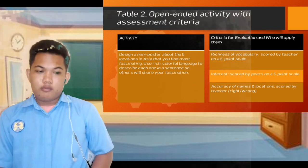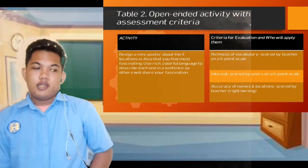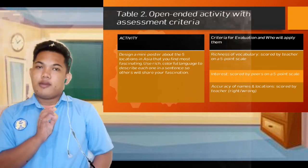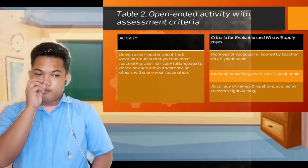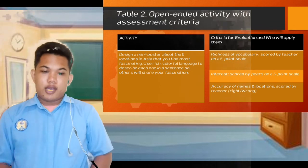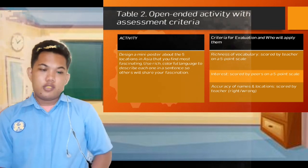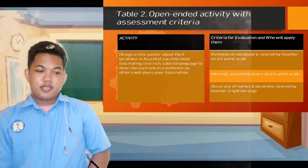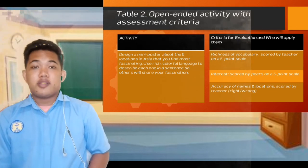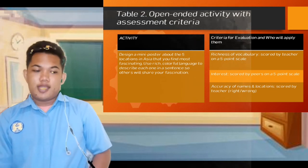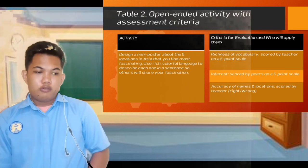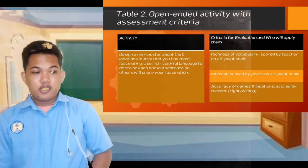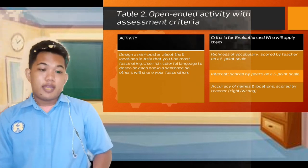Richness of vocabulary — using rich and colorful language. The next is interest. And also the accuracy of names and locations. These are scored by a teacher on a five-point scale.